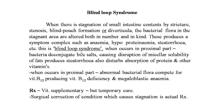The next point is blind loop syndrome. When there is stagnation of small intestinal contents due to stricture, stenosis, blind pouch formation, or diverticula, the bacterial flora in the stagnant area is altered in both number and kind. This produces a symptom complex such as anemia, hypoproteinemia, and steatorrhea. In the proximal part, bacteria deconjugate bile salts causing disruption of micellar solubility of fats, producing steatorrhea and disturbing absorption of proteins and vitamins. Abnormal bacterial flora also compete for vitamin B12, producing vitamin B12 deficiency and megaloblastic anemia. Treatment is vitamin supplementation for temporary cure; surgical correction of the cause of stagnation is the definitive treatment of choice.